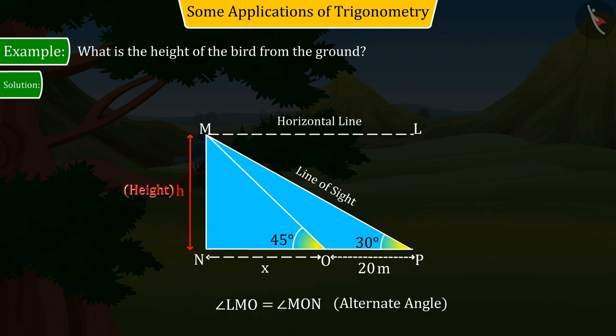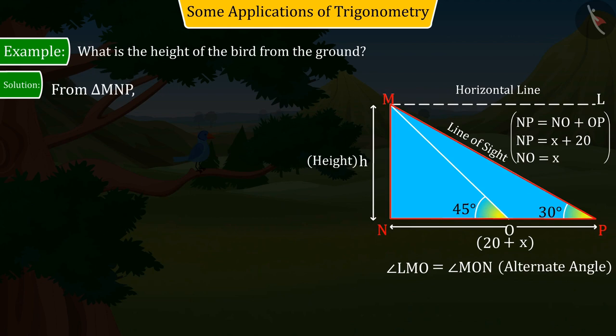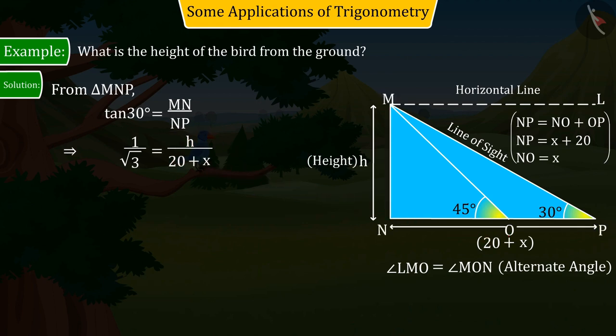Since we have to find the height of the bird from the ground, let's discuss triangle MNP. In triangle MNP, the measure of side MN will be H and the measure of side NP will be 20 plus X. With the help of the information obtained from right angle MNP and trigonometric ratios, the value of tan 30 degrees is obtained as MN by NP. On substituting the values, the value of H is obtained as 20 plus X by square root of 3. This is not a complete solution because the value of X is unknown. Let us represent it by equation 1.